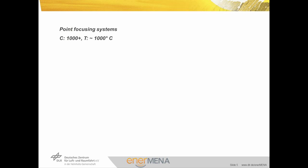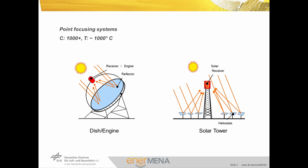Here we see the point focusing systems, for example the dish engine or the solar tower. Both systems concentrate the sun energy in one point in the receiver. Those point concentrating systems reach concentration factors of 1000, meaning 1000 suns come together and produce a temperature of 1000 degrees. But for our steam production we only need 500 degrees, so those systems should perhaps use other process technologies like the Stirling motor or gas turbine.